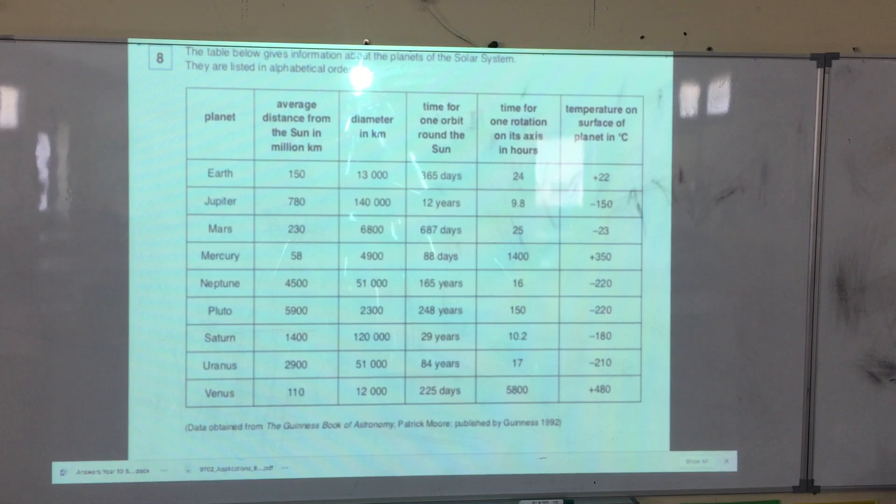This table below gives information about the planets of the solar system. They are listed in alphabetical order.